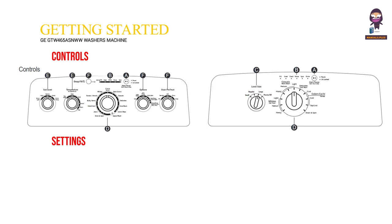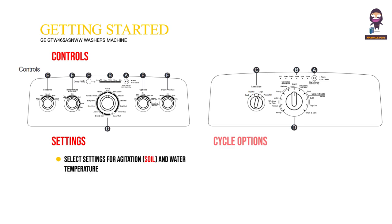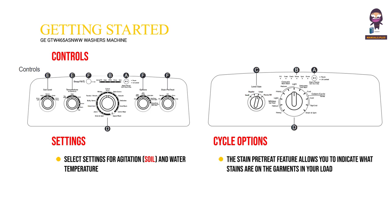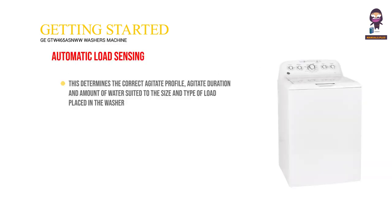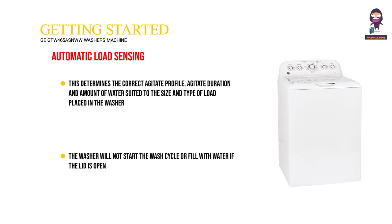Settings: Select Settings for Agitation, Soil, and Water Temperature. Cycle Options: The Stain Pre-Treat feature allows you to indicate what stains are on the garments in your load. An initial water fill is performed at a temperature tailored to the stain type selected, enabling a concentrated cleaning step. Automatic Load Sensing determines the correct agitate profile, agitate duration, and amount of water suited to the size and type of load. The washer will not start the wash cycle or fill with water if the lid is open.